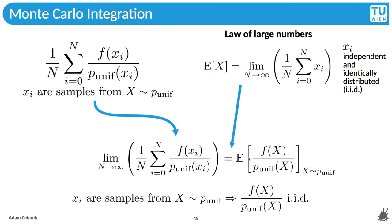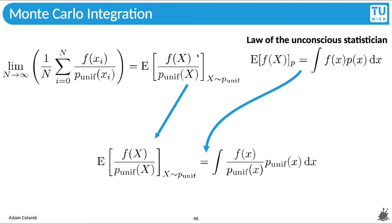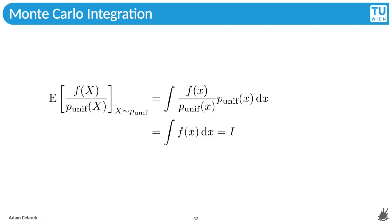However, this is not the distribution that was used to apply the law of large numbers. F of x divided by p of x is not distributed uniformly. But it is enough that the samples f over p are independent and identically distributed. Now we have that expectation and we can plug it into the law of the unconscious statistician. The f from the law is f over p and the distribution is uniform. So our result is an integral of f over p times p. And well, the probabilities cancel out and we see that this integral is in fact i. Great, the cat is happy. This is our proof.